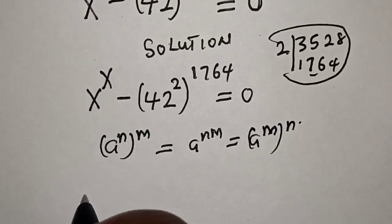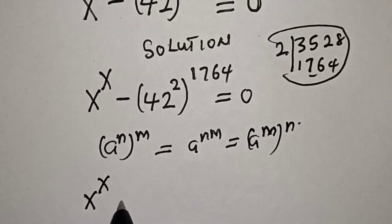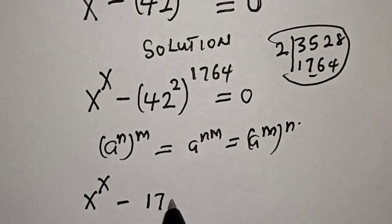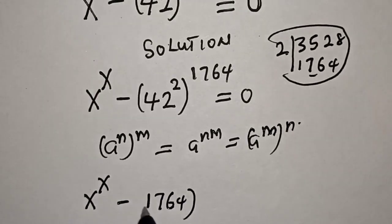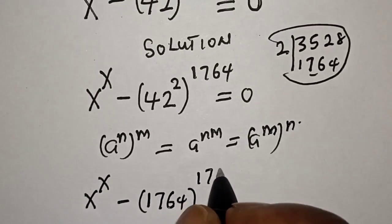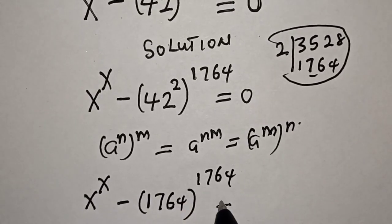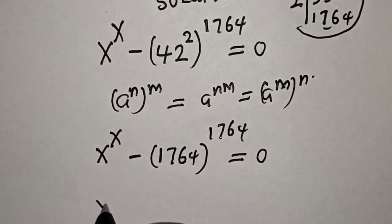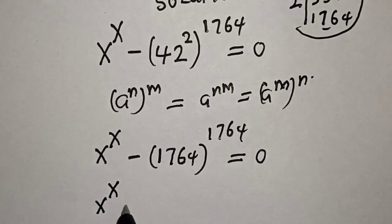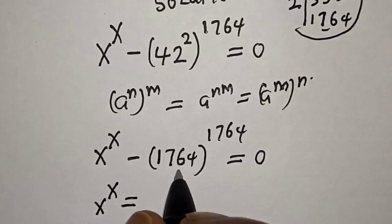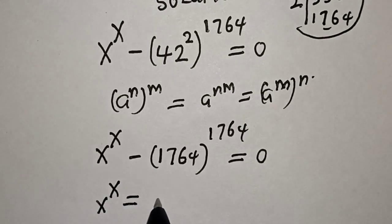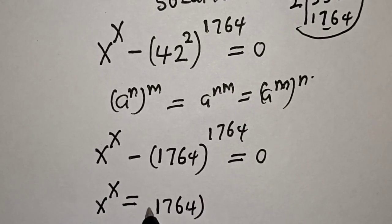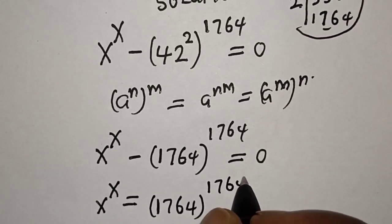Applying this, we have s raised to power s minus 42 squared, that is 1764, raised to power 1764, is equal to 0. So s raised to power s is equal to 1764 raised to power 1764.